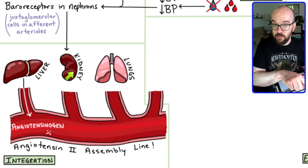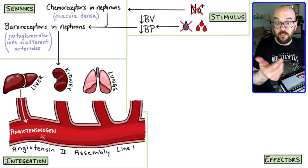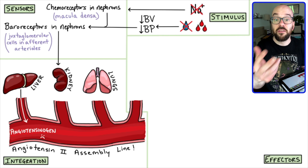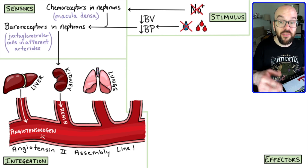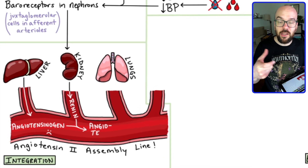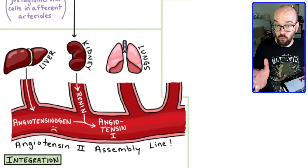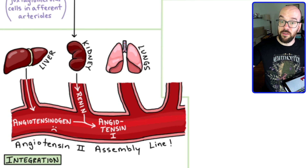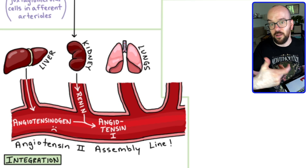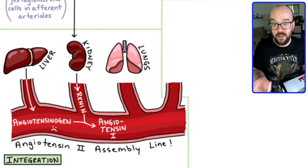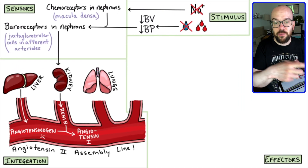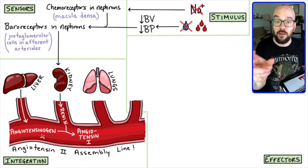The kidney is where the real regulation happens. Whenever the juxtaglomerular cells detect that blood pressure is low, or receive a signal from the macula densa that sodium levels are low, the kidney releases an enzyme called renin — not a hormone, because renin interacts with a chemical and causes it to react and become a new chemical. Renin's job is to convert angiotensinogen into angiotensin I, and those renin molecules come from the juxtaglomerular cells.